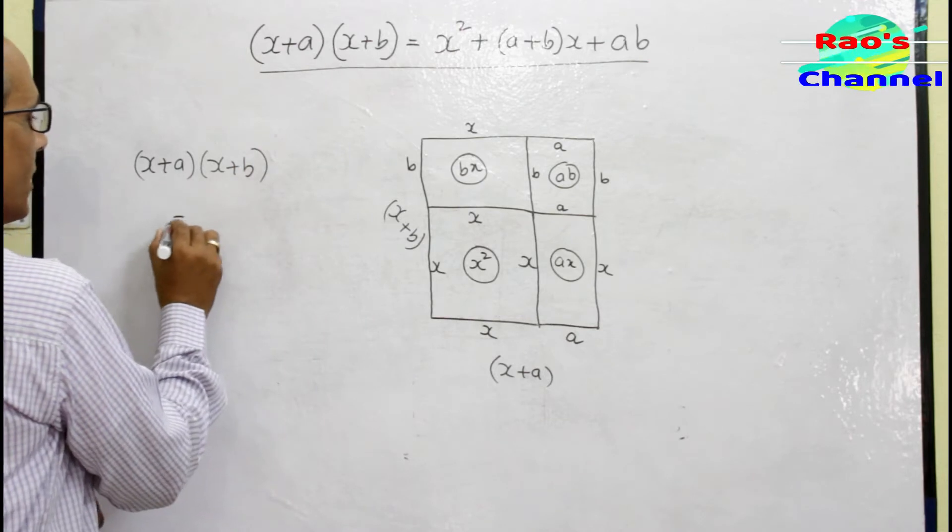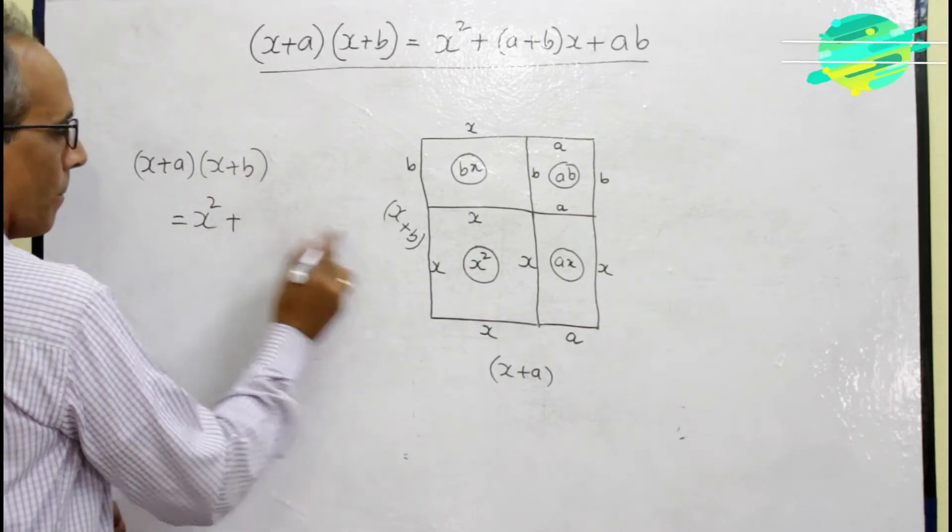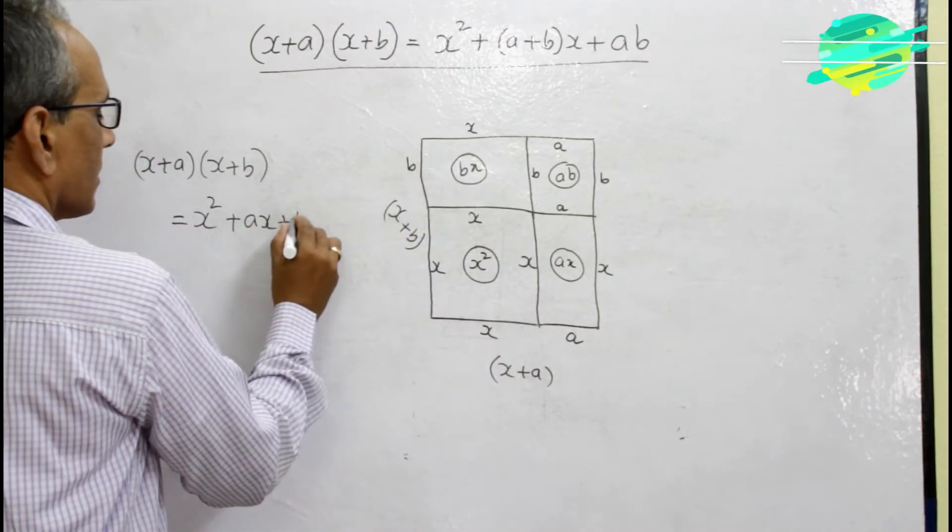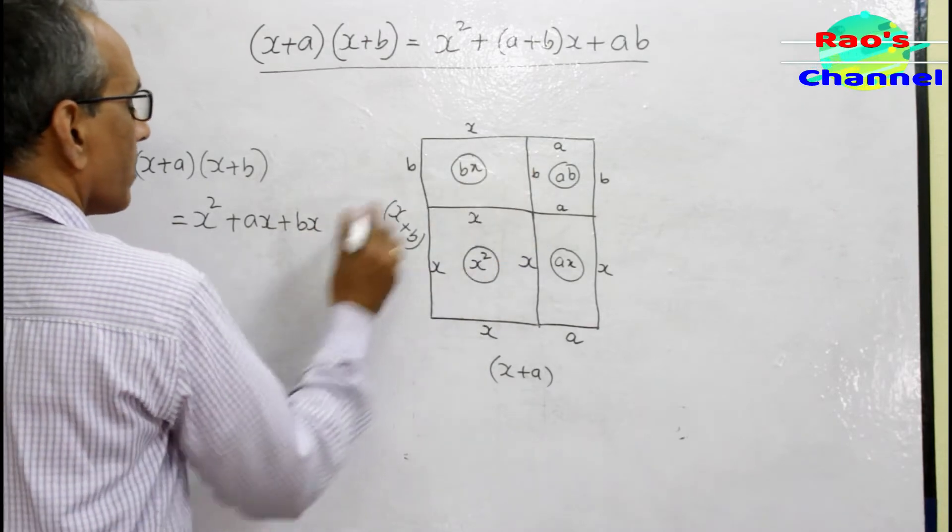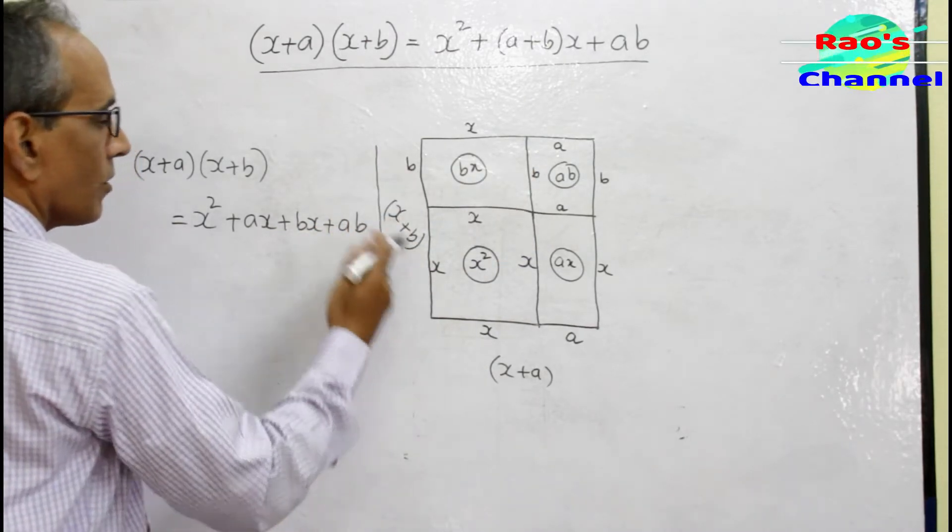I have four regions inside: one is x², one is ax, one is bx, and one is ab. All together is the area of the whole figure.